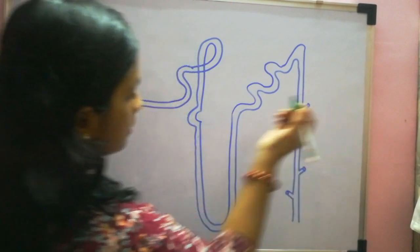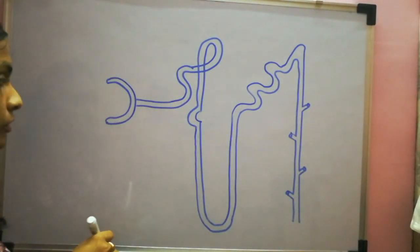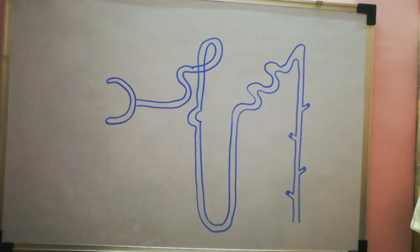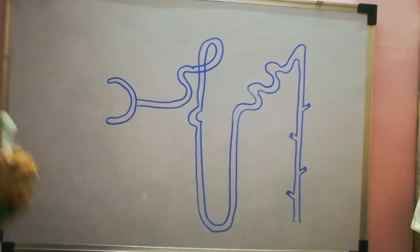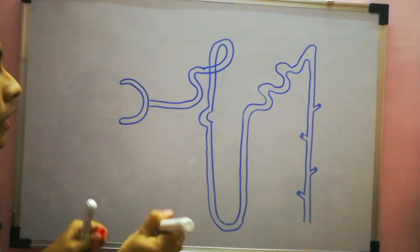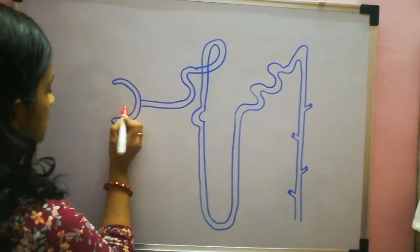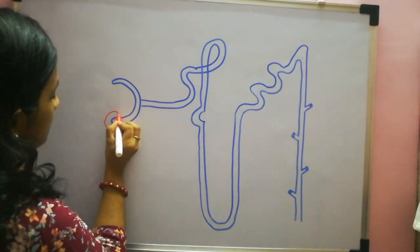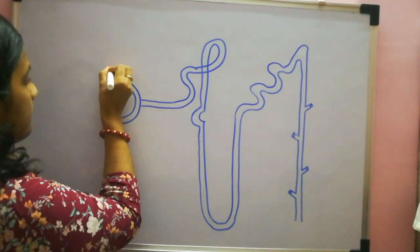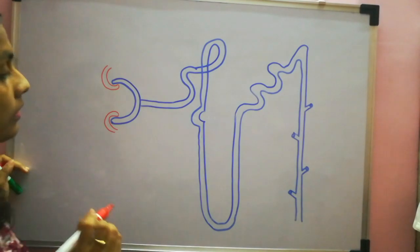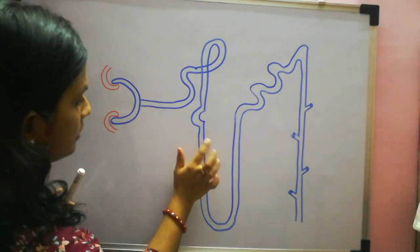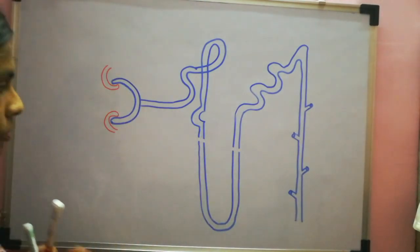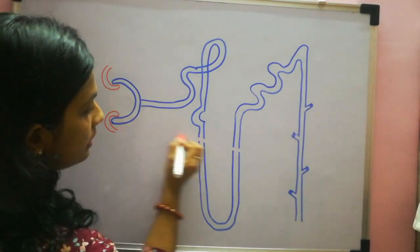So now your basic structure of nephron is ready. Now we have to draw the capillaries, so I'm using another color pen for this. For drawing the capillaries, there is one more short method. What you have to do is first take out the arterioles from here, from the side. Put up a small portion, exactly like this, and then make a straight line here.